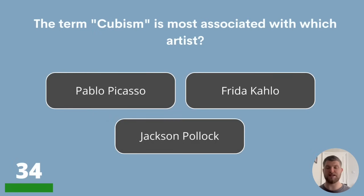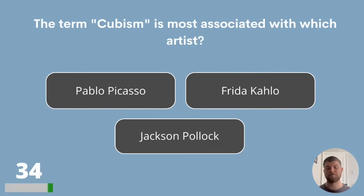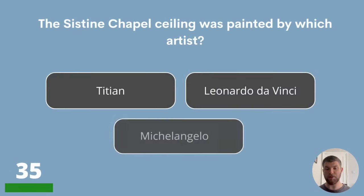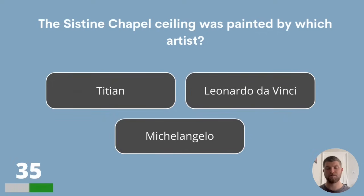Question 34. The term Cubism is most associated with which artist? Pablo Picasso, Frida Kahlo or Jackson Pollock? Question 35. The Sistine Chapel ceiling was painted by which artist? Titian, Leonardo da Vinci or Michelangelo? The answer is Michelangelo.